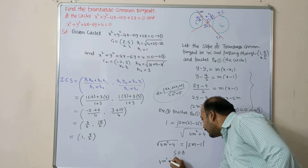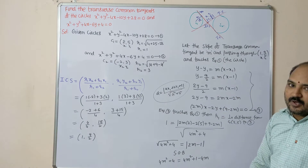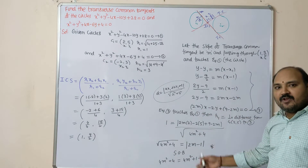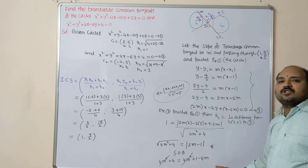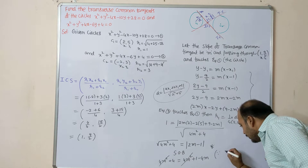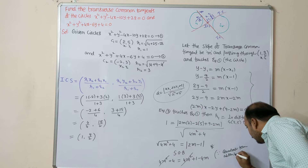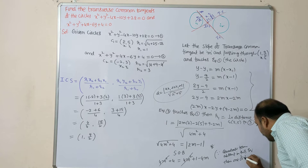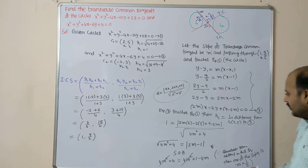Squaring both sides: 4m² + 4 = (2m - 1)² = 4m² + 1 - 4m. Observe here students — this is a very important step. The 4m² terms cancel on both sides. Since the quadratic term is absent in the resulting equation, one of the slopes is undefined, meaning m = 1/0 (infinity). Keep this in mind.